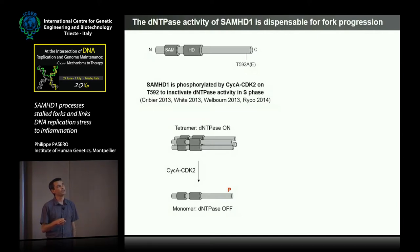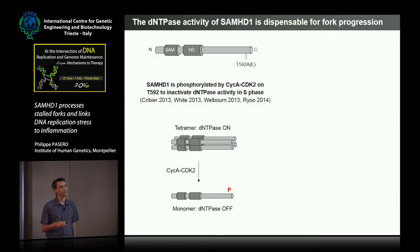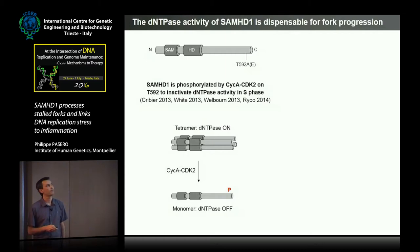When unphosphorylated, SAMHD1 forms a tetramer, and upon phosphorylation by Cyclin A/CDK2 the tetramer dissociates and the dNTPase activity is lost. But this, at least in vitro, retains some nuclease activity.